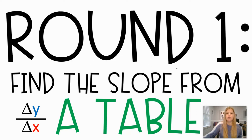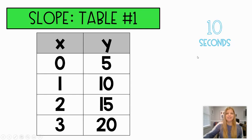Ready? Round one is finding the slope from a table. So remember, finding a slope from a table means you're doing delta y over delta x. It's the change in y divided by the change in x and that's it. Ready? Go.